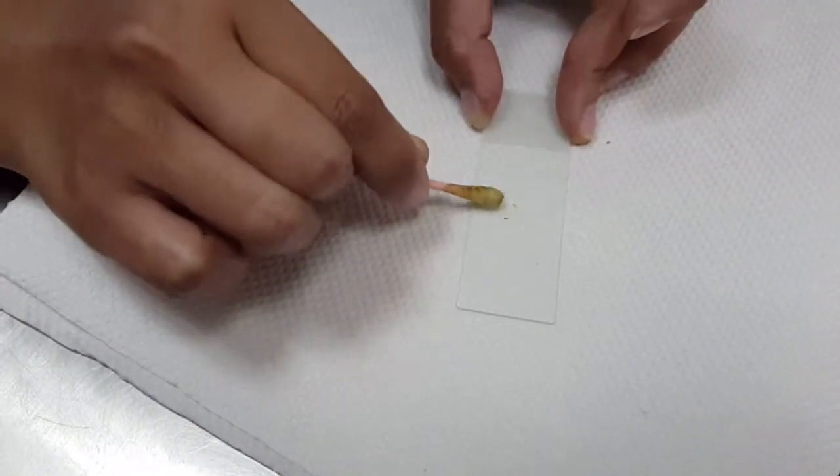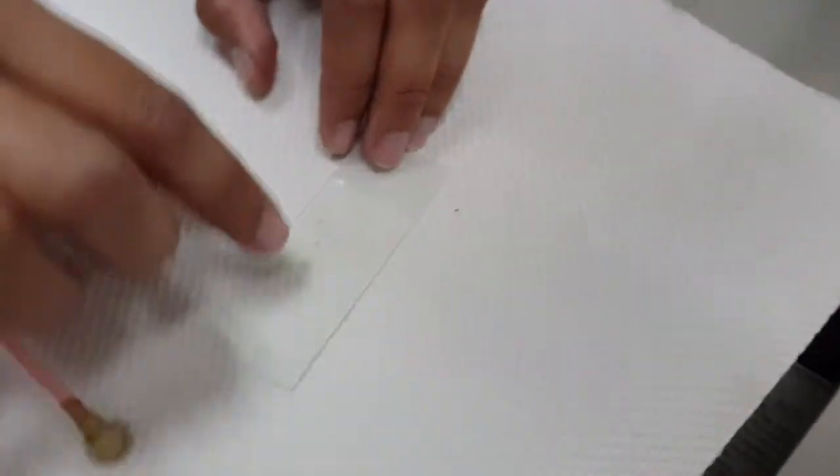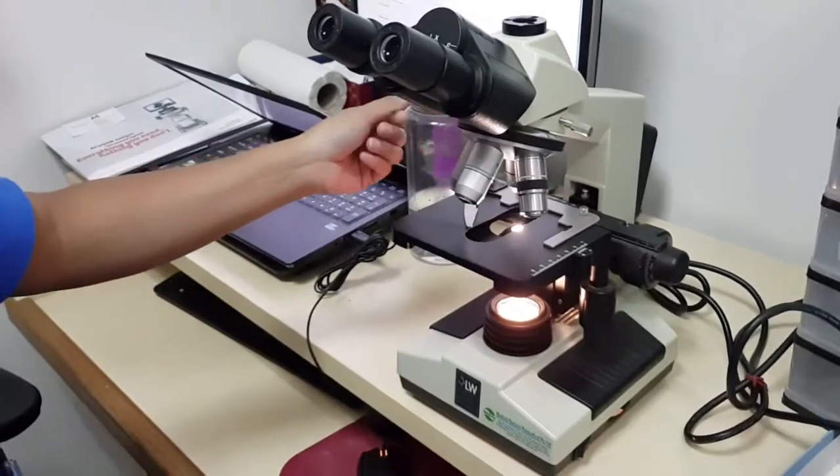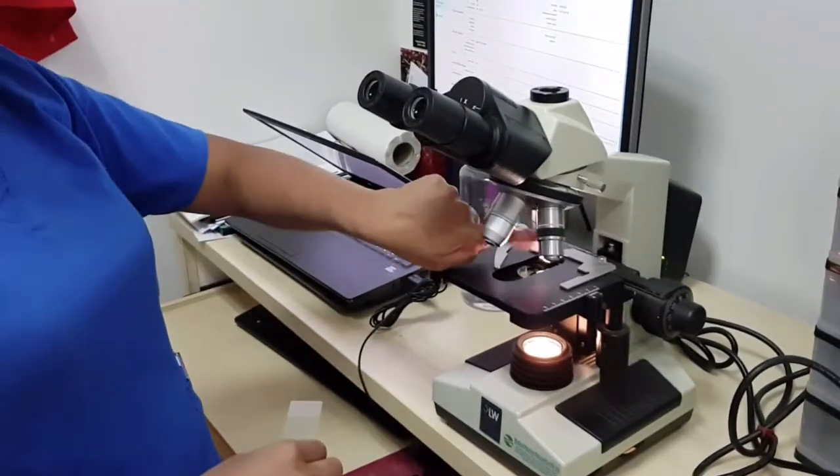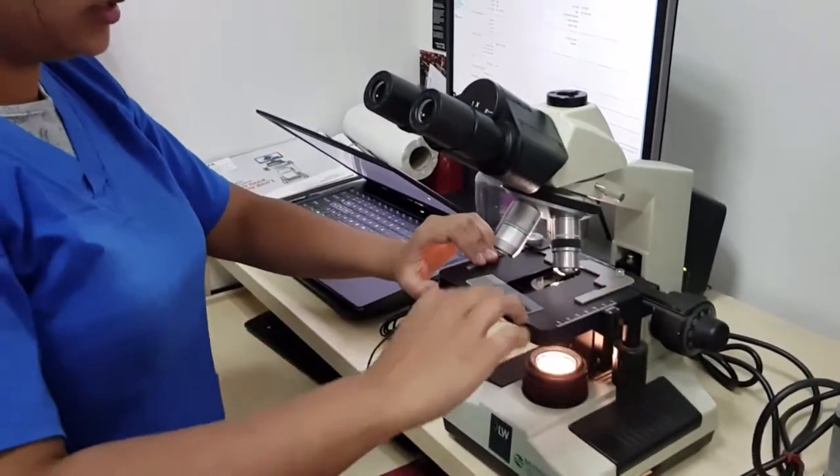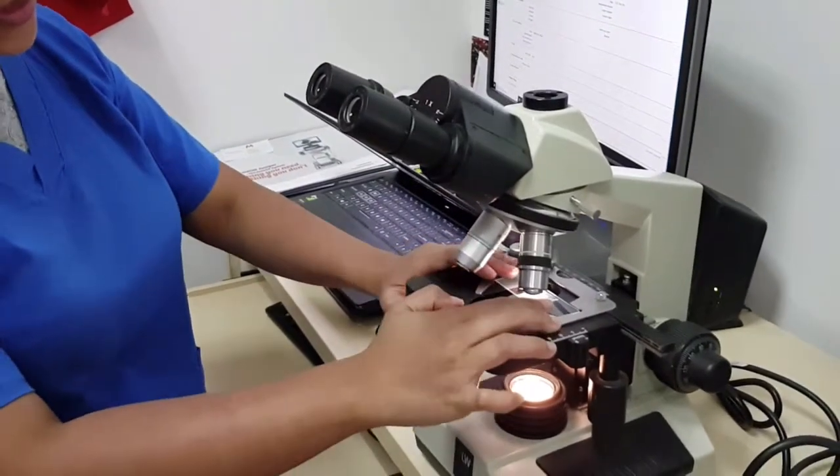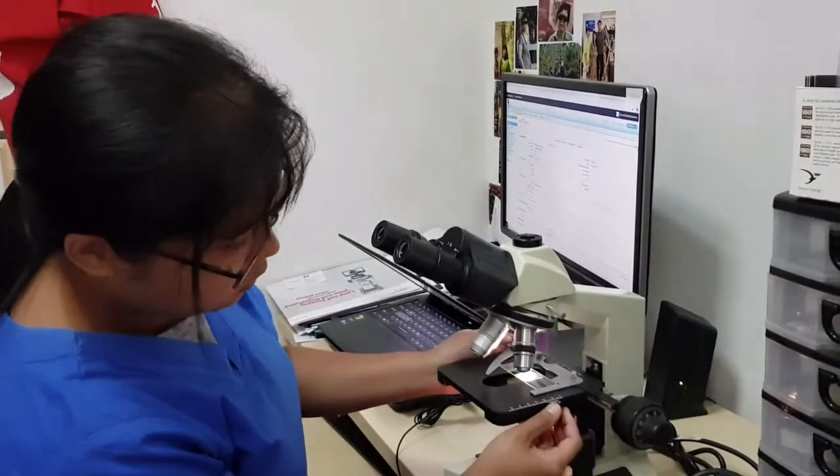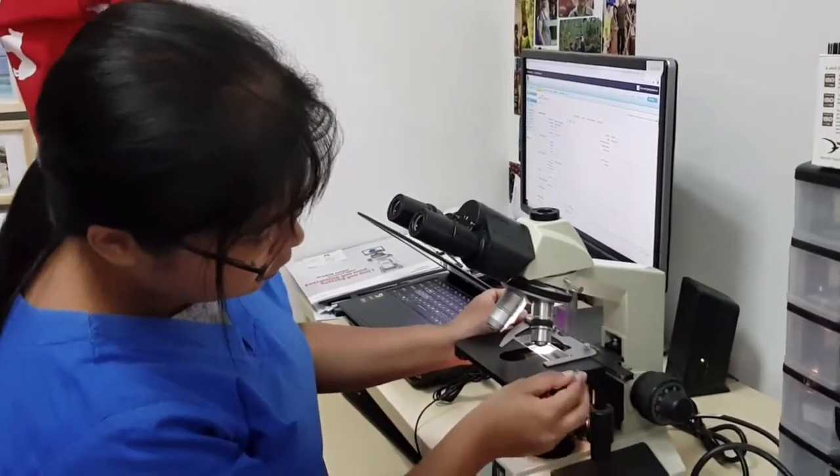The veterinary nurse has smeared a sample on a microscopic slide. What is this sample? Where did this sample come from? What is the nurse doing? And why does she need the microscope? Is there anything present in the sample that she needs to check for?